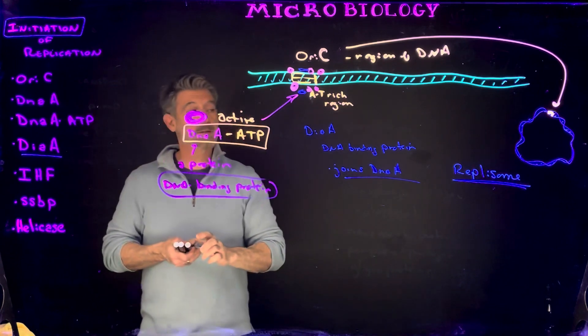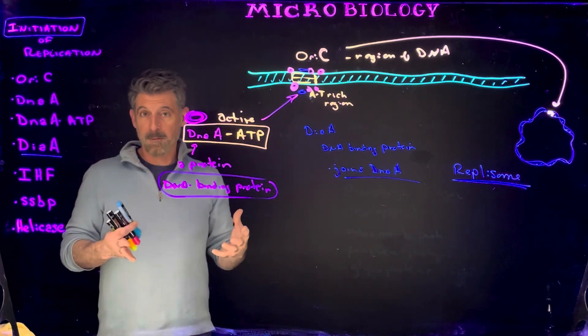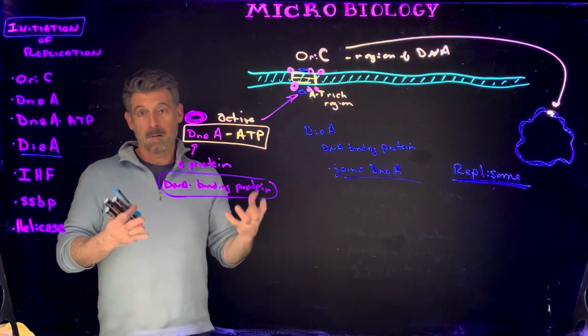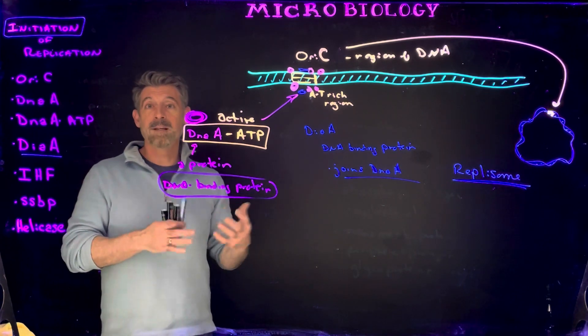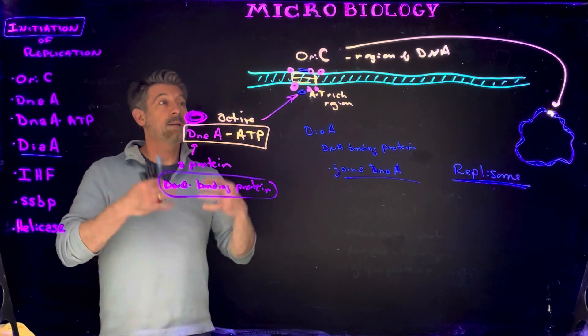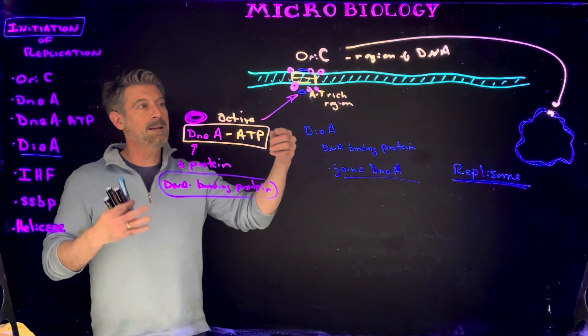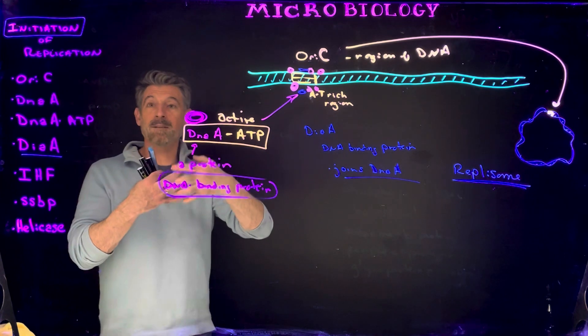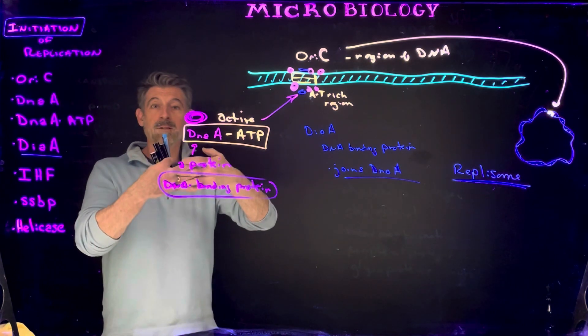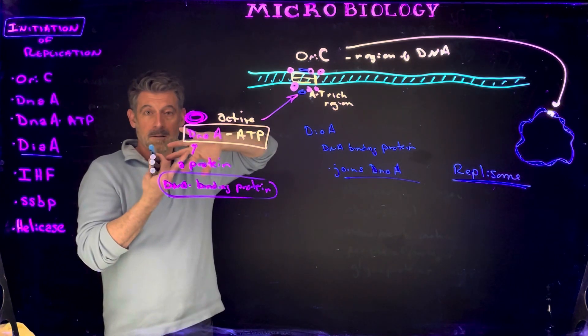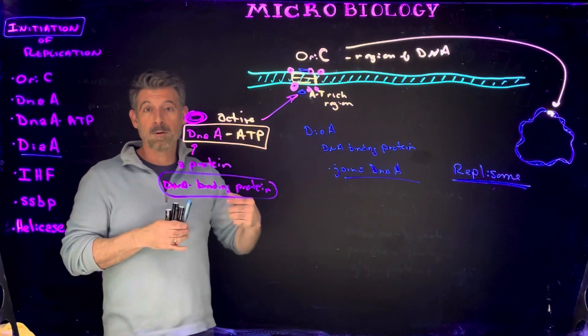So the replisome structure is going to be the structure composed of numerous different proteins that begins and carries out the process of DNA replication. And so before it can begin, you have a couple problems. The DNA is two strands and the two strands are held together with hydrogen bonds. In addition to that, the strands are in a helical formation. So they're coiled around one another.